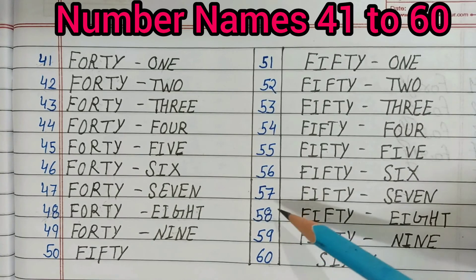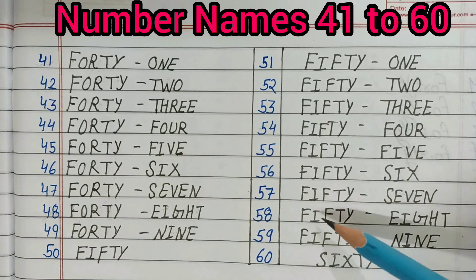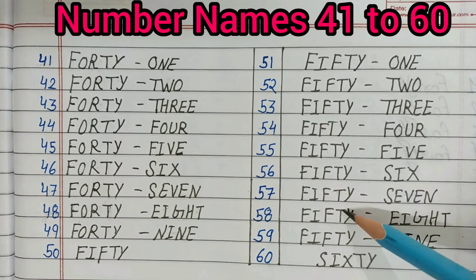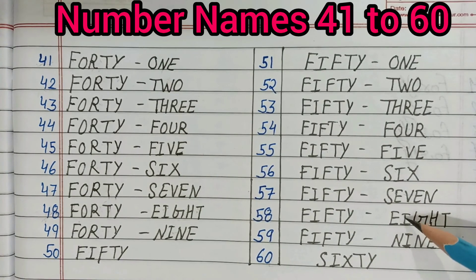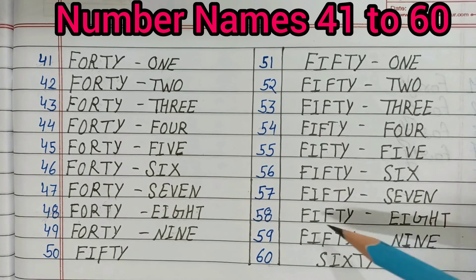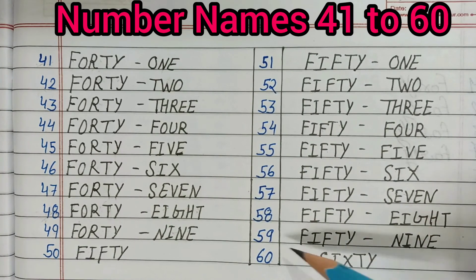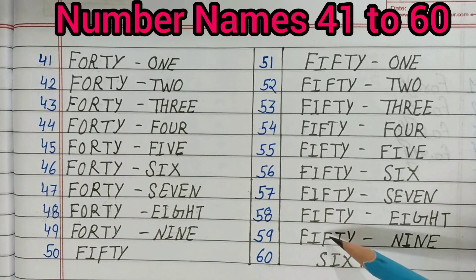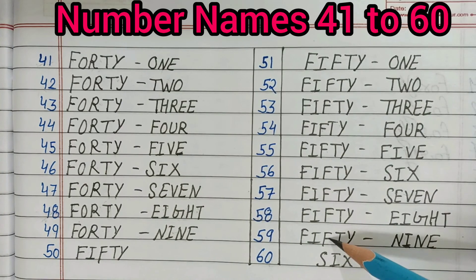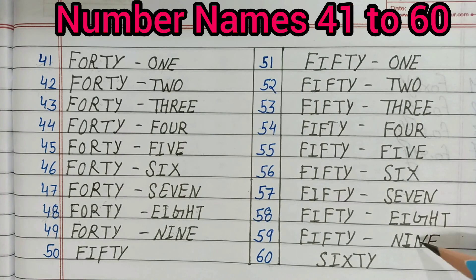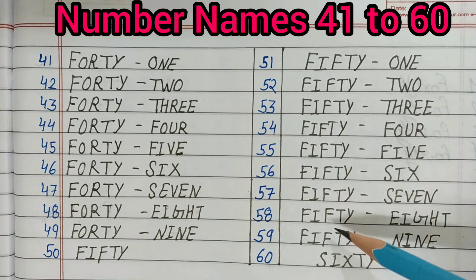58: F-I-F-T-Y (50) E-I-G-H-T (8) = 58. 59: F-I-F-T-Y (50) N-I-N-E (9) = 59.